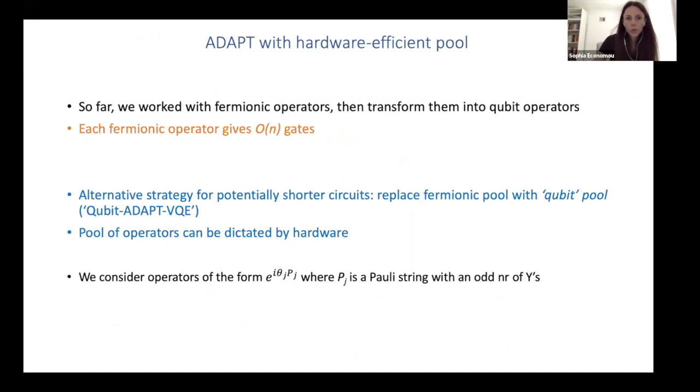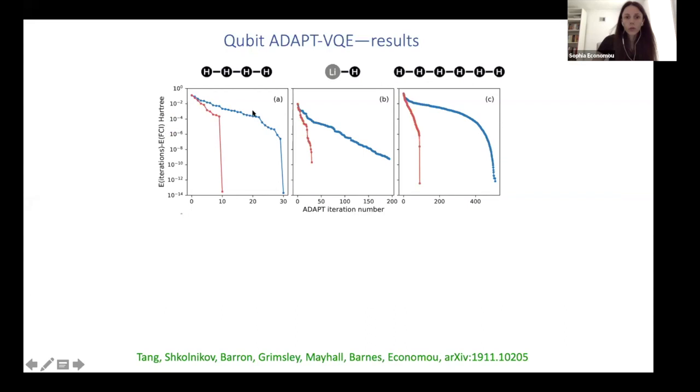So far we worked with fermionic operators, but since each fermionic operator maps onto many CNOT gates, we actually want to see what happens if I do something more hardware efficient. So here we take Pauli strings and use those as our pool. And we need to have an odd number of Y's because otherwise the gradients are zero. And we want to keep everything real. So here, if I compare the fermionic ADAPT I just showed you to this qubit ADAPT, and this is the ADAPT iteration number, you see that the fermionic ADAPT actually needs fewer parameters.